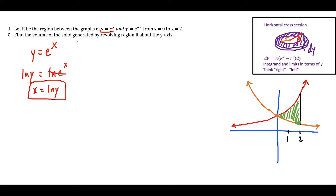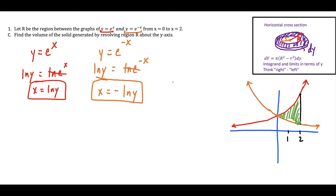For the other function, y equals e to the negative x, we apply the same algebra: natural log of y equals natural log of e to the negative x, giving us x equals negative natural log y. So the red curve becomes x equals natural log of y, and the orange curve becomes x equals negative natural log of y. These forms in terms of x will be essential for setting up our integrals.